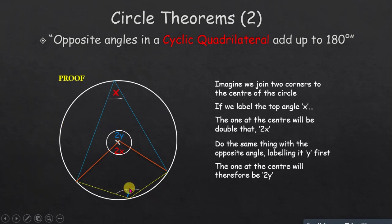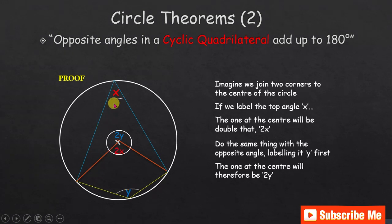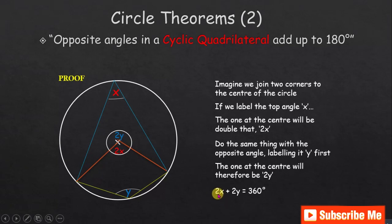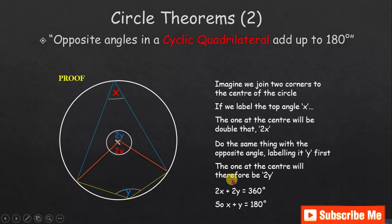Applying the properties step by step: x plus y gives 180 degrees. We are proving the formula from another formula. The angle at the center is twice the angle at the circumference, so 2x plus 2y equals 360 degrees. Dividing through by 2, x plus y equals 180 degrees — and that is how the theorem is proved.